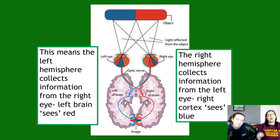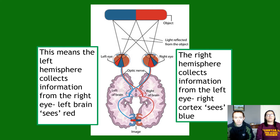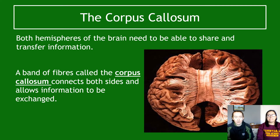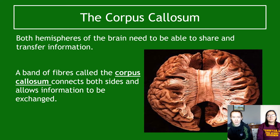This will be important for the next video on split brain - what happens when the two hemispheres aren't communicating properly. The key idea is that any functions on the left side, including sight, are controlled by the right cerebral hemisphere, and functions on the right are controlled by the left cerebral hemisphere. It's important that these two hemispheres can communicate with each other.